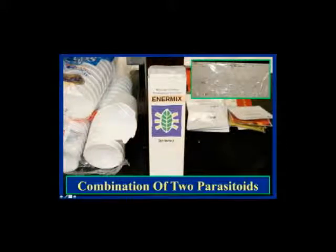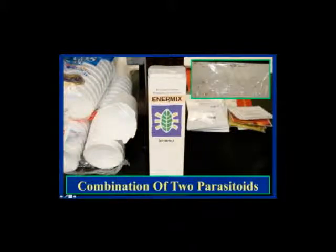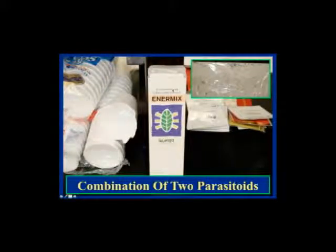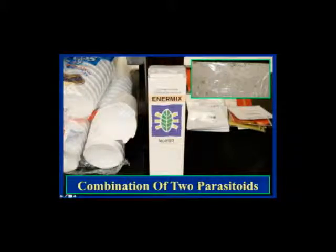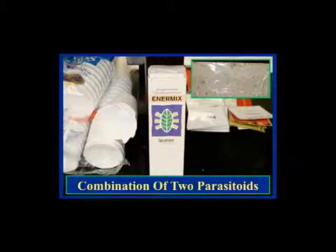Biological control agents for whitefly include parasitoids, predators, and beneficial fungi commercially available — Beauveria bassiana sold as BotaniGard, and Isaria fumosorosea sold as NoFly or PreFeRal. If you don't know which whitefly species you have, you can purchase combination releases. Encarsia formosa is a parasitoid for greenhouse whitefly; Eretmocerus eremicus is a parasitoid for sweet potato whitefly B biotype. Biocontrol must be introduced early, before whitefly populations become excessive.